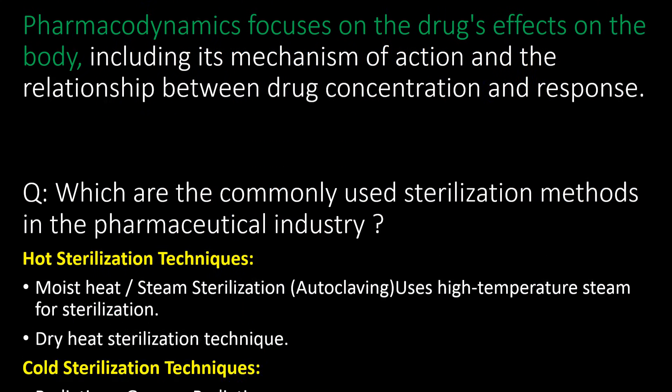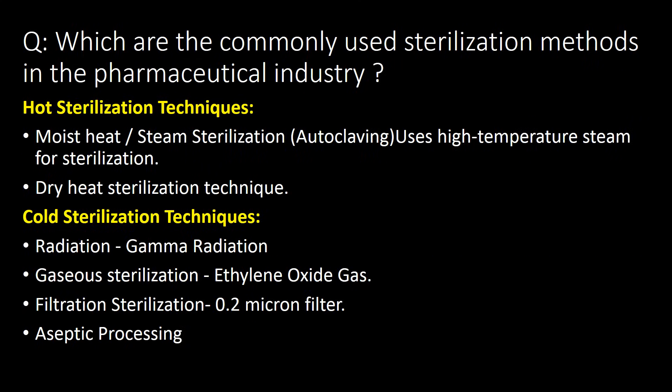Which are the commonly used sterilization methods in the pharmaceutical industry? For easy understanding, we will divide the sterilization methods into two categories: first, hot sterilization technique, and second, cold sterilization technique. In the hot sterilization technique, we raise the temperature to higher degrees. This can be achieved with two methods: moist heat or steam sterilization, and dry heat sterilization.